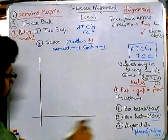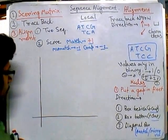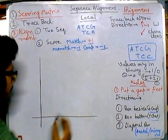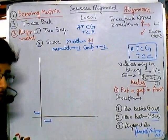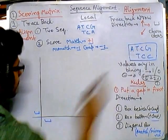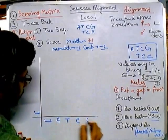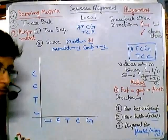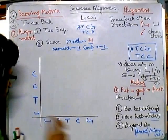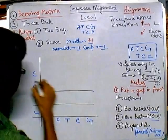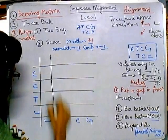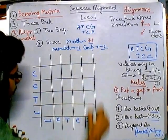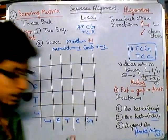Let's begin with matrix preparation. We place our coordinates, then put our sequences: after a gap, place the sequence A, T, C, G along one axis, and T, C, C along the other direction. Then draw the rows and columns. The matrix is now prepared.